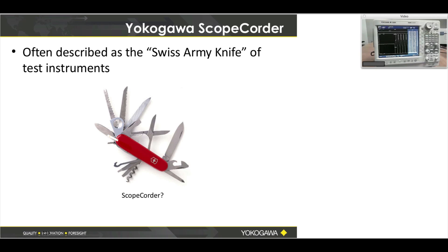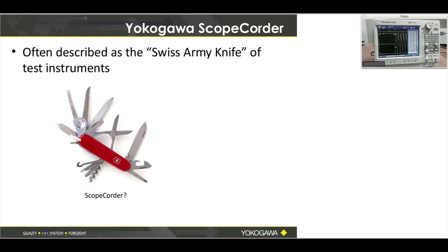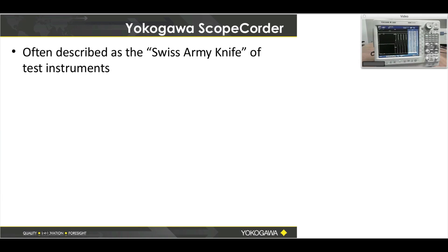The ScopeCorder is a Swiss Army knife — it will probably do anything you can think up. Sometimes you may need help to get through a test, and that's what I'm here for. I keep a DL850 at my desk every day — just email me or call me and I can answer just about any question. We can push buttons together over the scope as well.